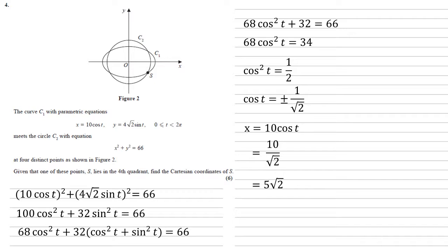Now to find y, as we've already worked out x, it makes sense that we now use our Cartesian equation, x squared plus y squared equals 66. Rearranging that would give us y equals plus or minus the square root of 66 minus x squared.